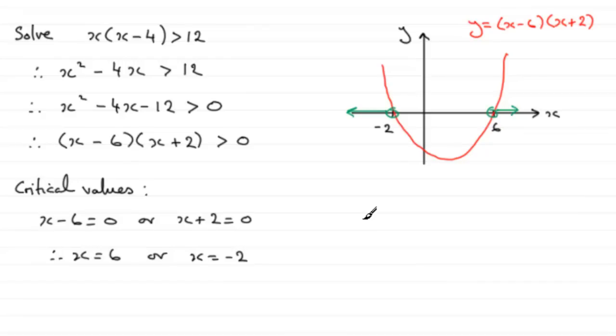So what we have got here, from the graph, we've got what is called two disjoint sets. So we write that as x is less than minus 2, or x is greater than 6.